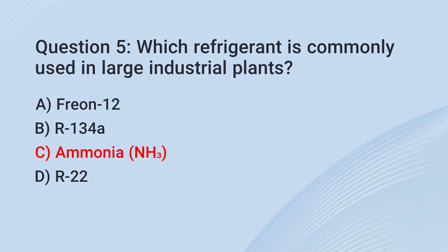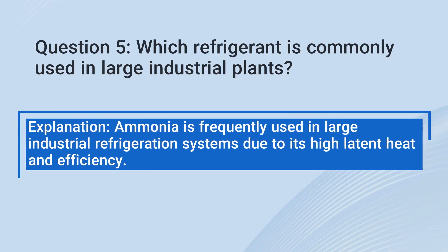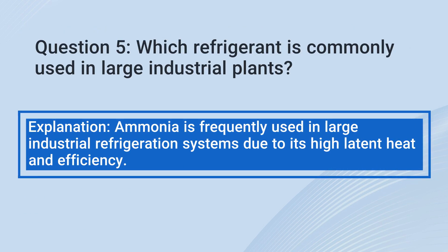The correct answer is C. Ammonia (NH3). Explanation: Ammonia is frequently used in large industrial refrigeration systems due to its high latent heat and efficiency.